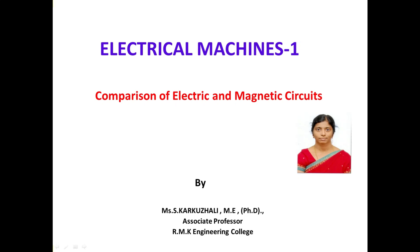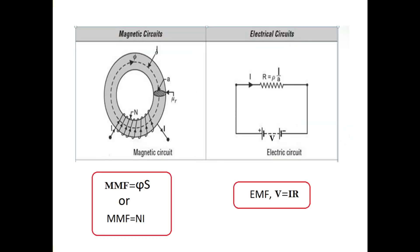Good morning students. Today we are going to discuss the comparison between electric and magnetic circuits. In the previous video we discussed the fundamentals of magnetic fields. Here we can see an example of a magnetic circuit and an example of an electric circuit. In an electric circuit, electromotive force is voltage V = IR by Ohm's law, and the current flows through a closed path called the electric circuit. The closed path provided for magnetic flux is called the magnetic circuit.